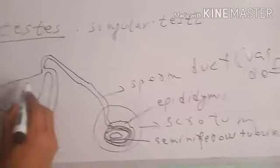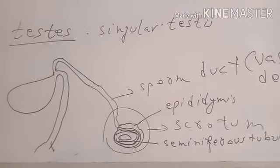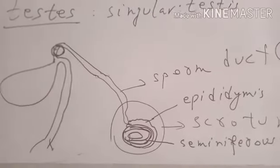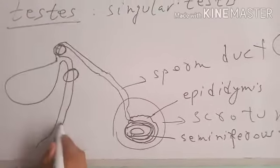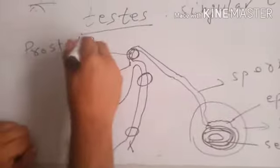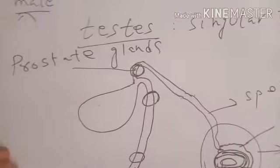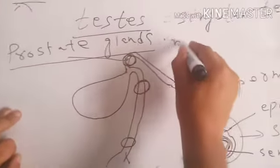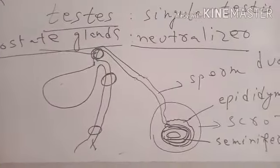Now we discuss the glands associated with the sperms and testes. These are the prostate gland, which is present around the junction area, the seminal vesicles, and the Cowper's gland, which is present near the ejection point. The prostate gland adds a neutralizing secretion so that the effect of urine on sperms is minimized. This neutralizer acts as a buffer and helps the sperms to survive.